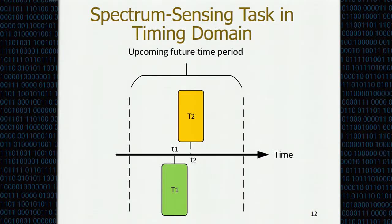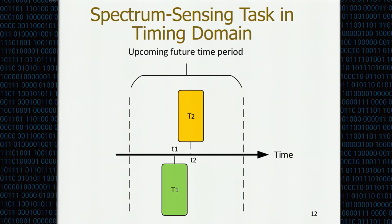In the timing domain, each task is specified to be completed within a time window. In our case, we assume the time period is generally very short, so participants assigned to the same sensing task must perform spectrum sensing at almost the same time. This ensures the diversity gain defined in our system. If participants arrive at different times, there will be no diversity gain.